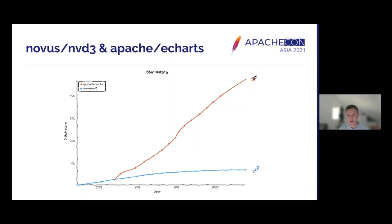eCharts, with its great development momentum, was a clear winner to us. There were actually multiple efforts to add support for eCharts and new chart types based on it. But it was difficult to integrate them because the Superset architecture was built very much around NVD3. We needed to do additional work on the backend to add proper support for other charting libraries.